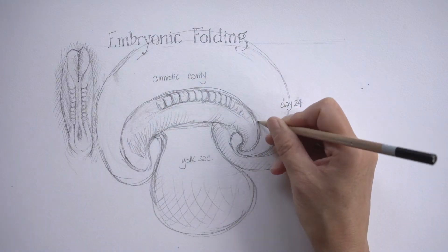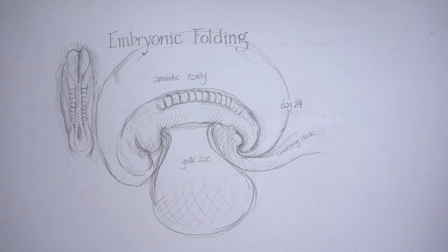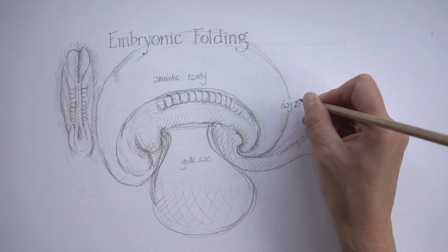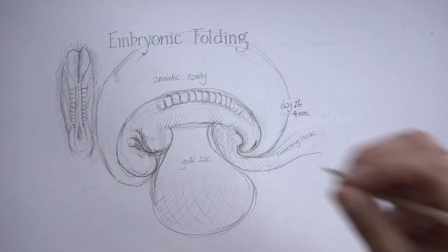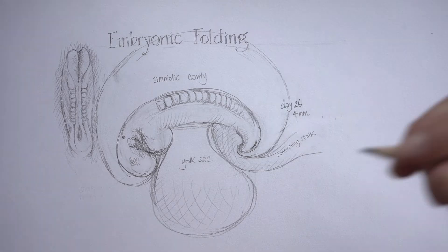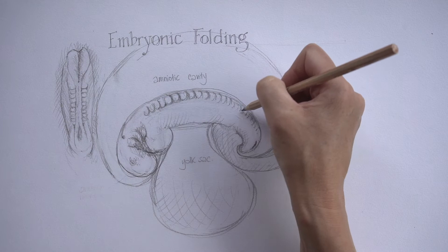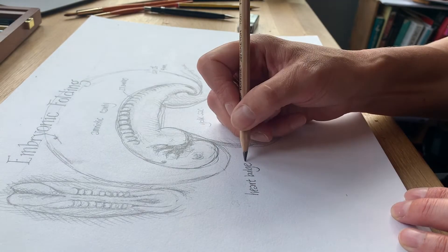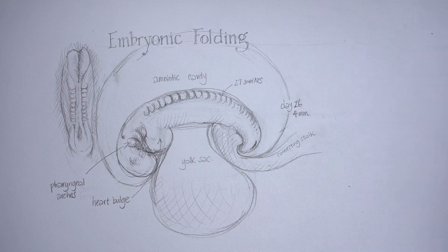The neural tube is closing, but the posterior or caudal neuropore and the anterior or cranial neuropore are still open. There's another structure appearing up towards the head end — a sort of bulge tucked underneath what will eventually be the head. By day 26 the anterior neuropore is closed and the caudal one is closing; the embryo is about four millimetres long. That small spot is the otic placode, which forms part of the ear, and there are pharyngeal arches — three on each side — forming in the neck region. You've got about 27 somites on each side now, and that bulge in the neck region is the heart bulge, or pericardial bulge.